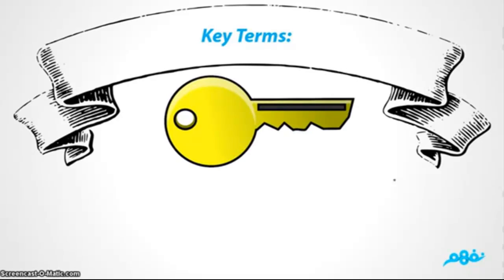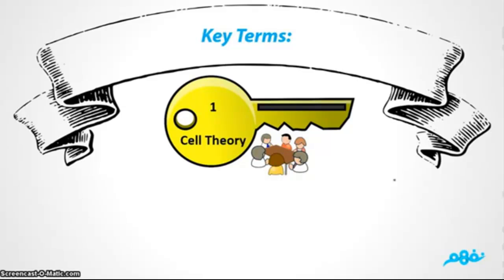First we will start with the key terms and important vocabulary. The first word is cell theory. What is a scientific theory? It's when scientists combine all their research, work, evidences, results, and experiments on a specific topic to prove it right or wrong. When they're sure it's right and all their work supports it, they communicate it to the world by making a theory. Today the scientific theory we're going to learn about is about cells.